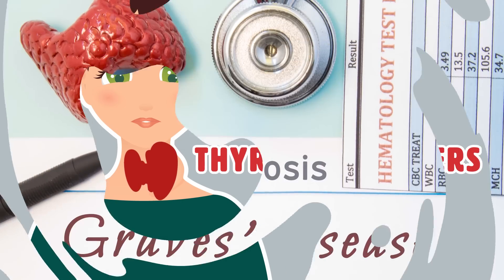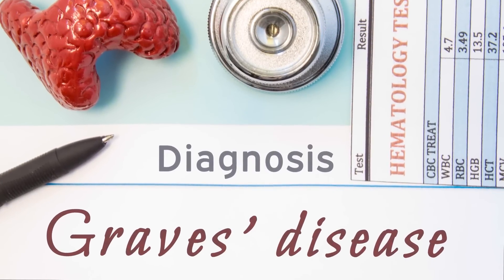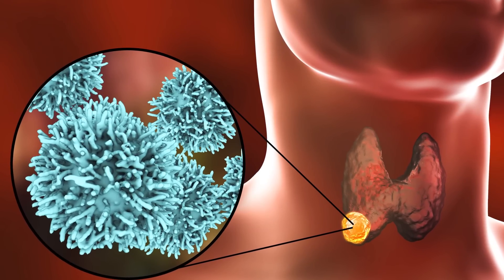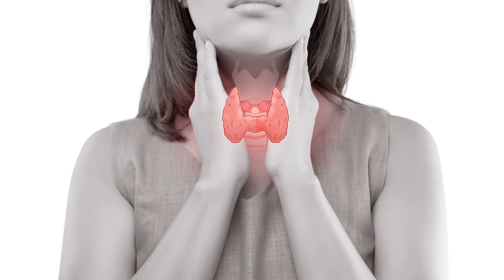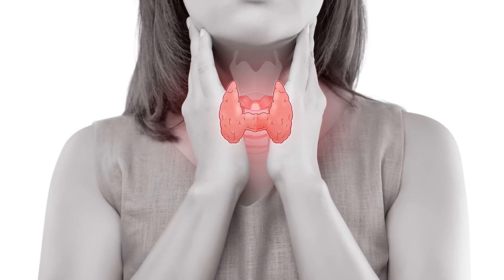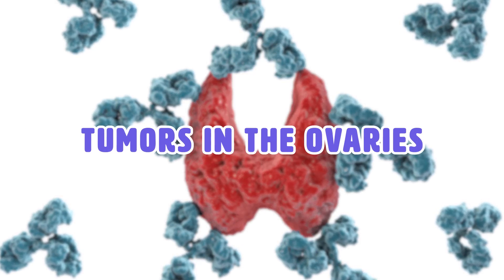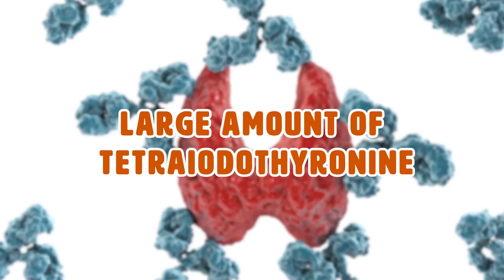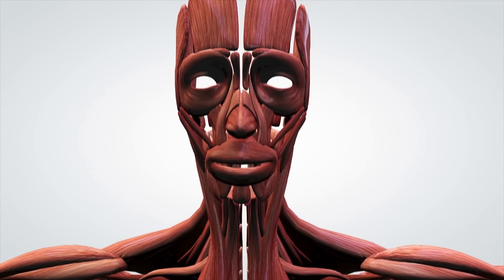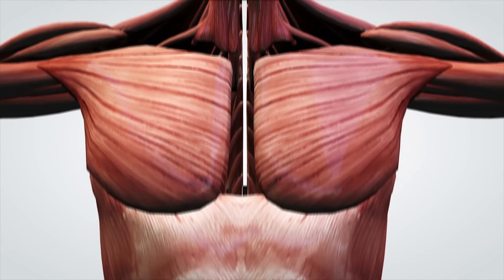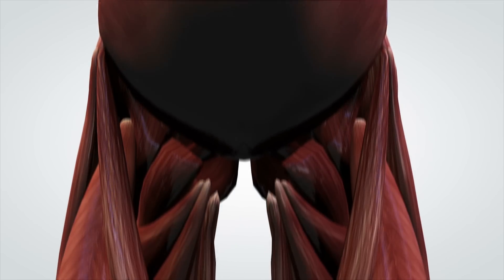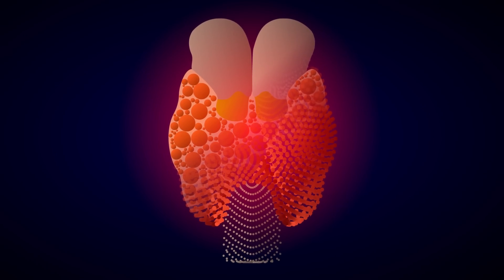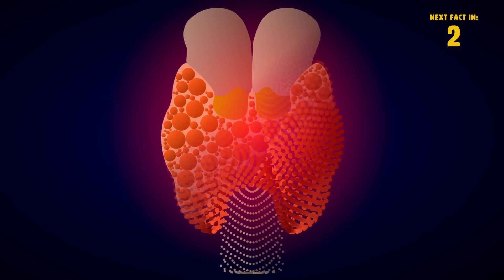The most common cause of hyperthyroidism is Graves disease, an autoimmune disorder that causes antibodies to stimulate the thyroid, making it secrete excessive amounts of hormone. Graves disease is more common among women and is usually genetic. Other causes include tumors in the ovaries, benign tumors of the thyroid or pituitary gland, excessive iodine, and large amounts of tetraiodothyronine taken through medication or supplements. In some cases, the body's immune system mistakenly attacks thyroid glands — a type of hypothyroidism called Hashimoto's thyroiditis. Hyperthyroidism can also be caused by nodules on the thyroid that grow and increase thyroid hormone output.